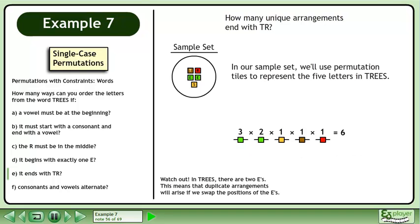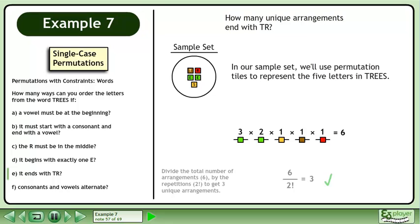Watch out! In TREES, there are two E's. This means that duplicate arrangements will arise if we swap the positions of the E's. Divide the total number of arrangements, 6, by the repetitions, 2!, to get three unique arrangements.